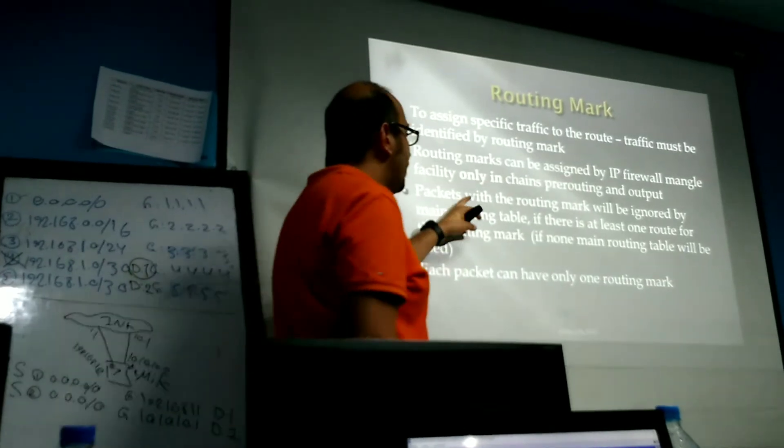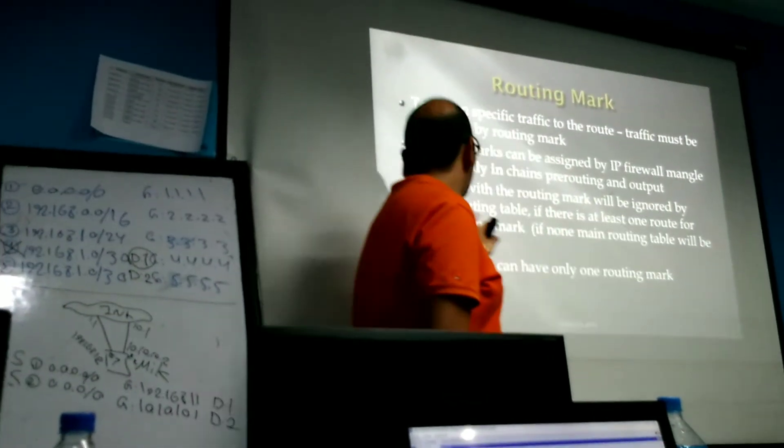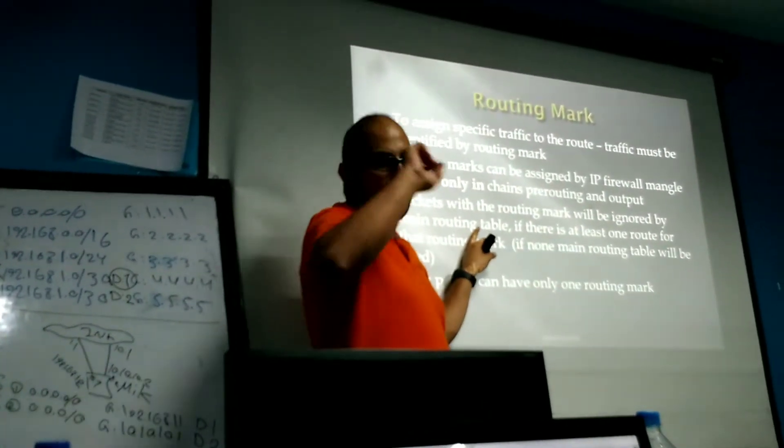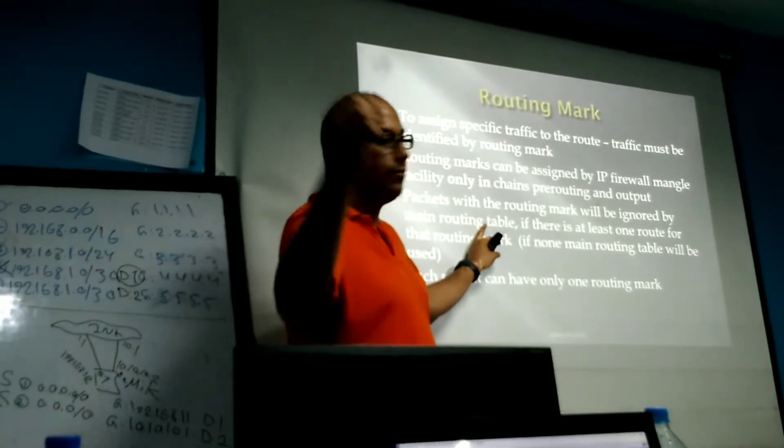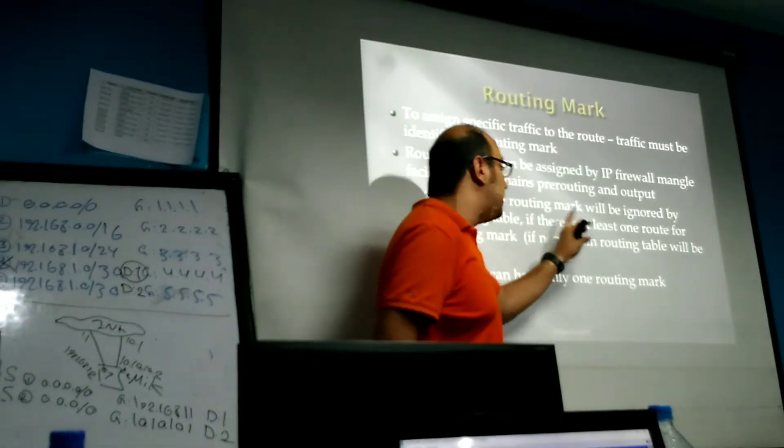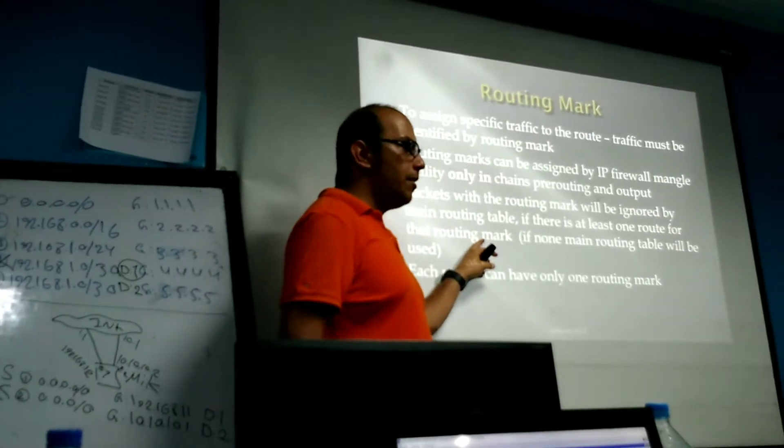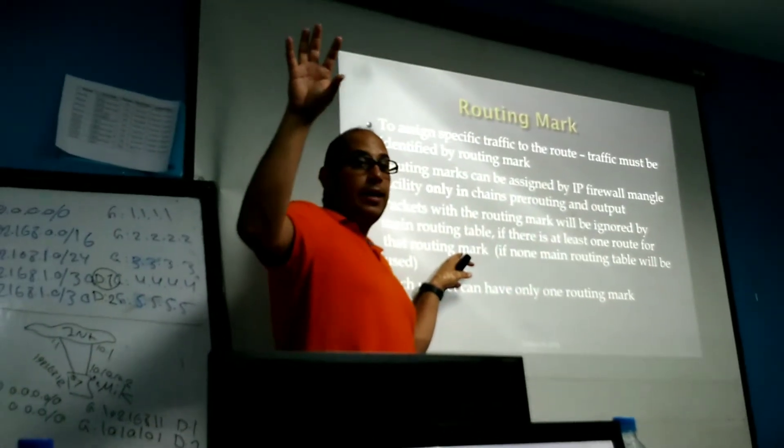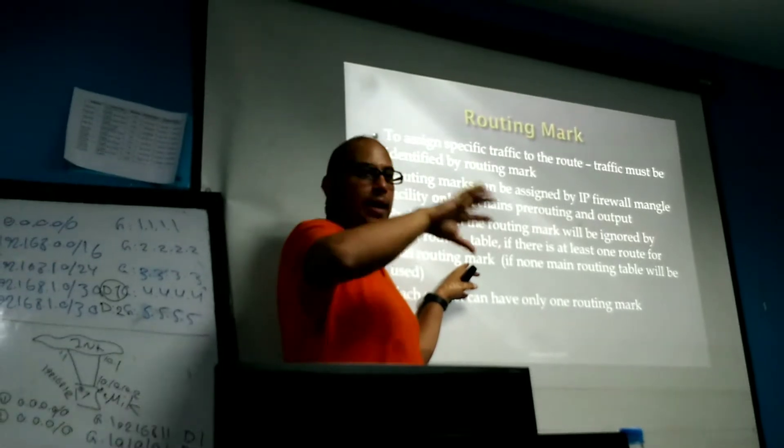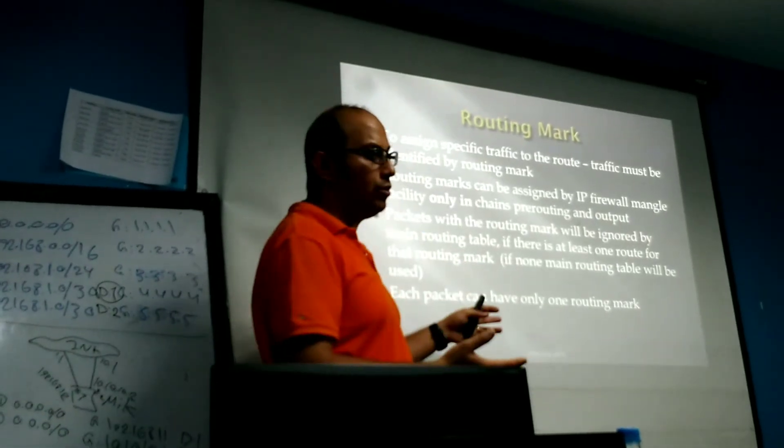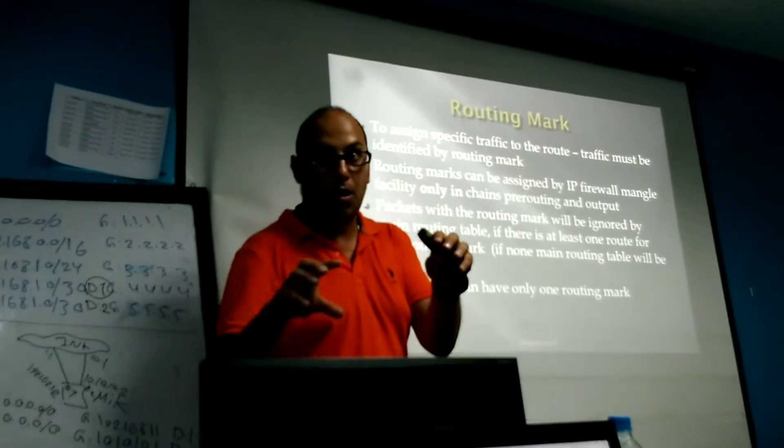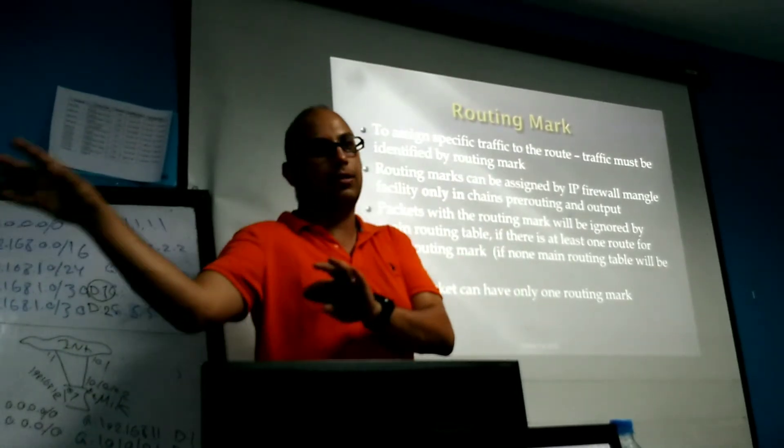Packets with the routing mark will be ignored by the main routing table. It makes another routing table for that route if there is at least one route for that routing mark. If you mark something but do not assign this mark to any route, it processes in the main routing table. If you assign a route to this routing mark, it processes in another routing table.